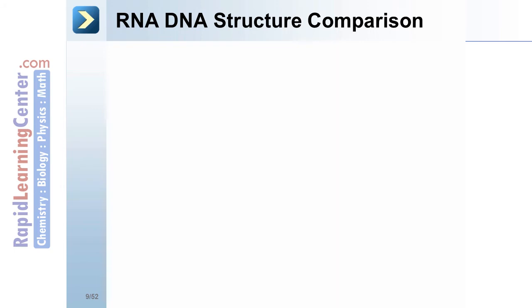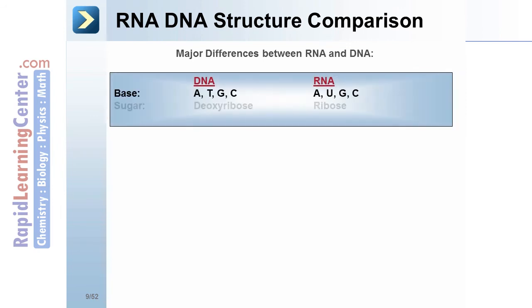RNA-DNA Structure Comparison. Major differences between RNA and DNA. Base, ATGC, AUGC. The difference between deoxyribose and ribose. DNA's 3D structure is long and a double helix. RNA can have various conformations.